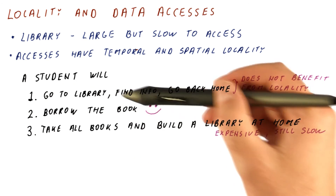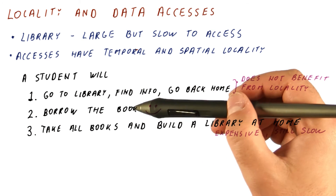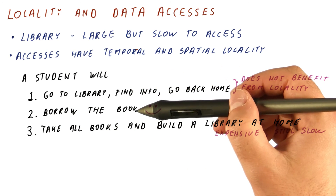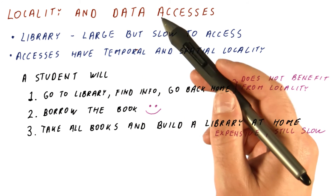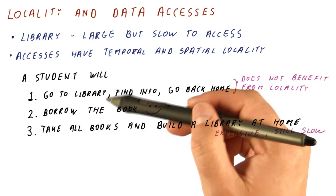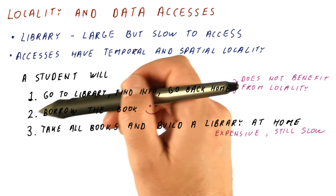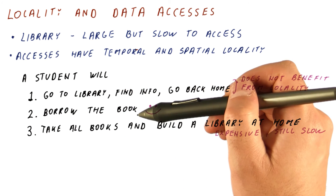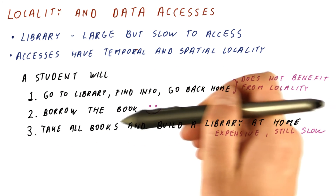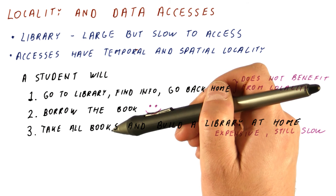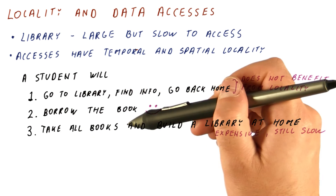Just like people when faced with these choices about the library usually choose the second option — because it's a good trade-off between being able to find information quickly and not being overwhelmed with the quantity of information brought in — when we have a processor that needs to access main memory, we will use the same approach. Instead of going to memory for every single memory location, we will bring the content of memory locations that we are interested in closer to us, but we will try not to bring too much, because that will result in a very slow structure close to us. So what we want is something small that keeps only the information we are really interested in.